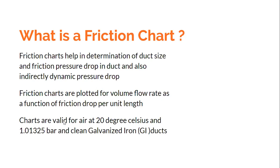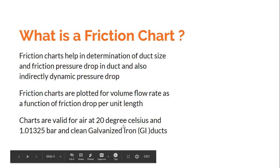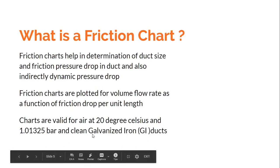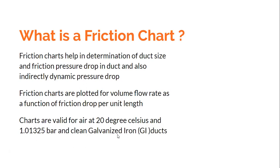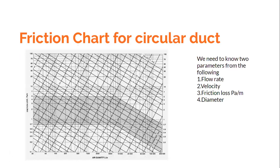The friction chart I am going to show is valid only for air at 20 degrees Centigrade and at a certain pressure — that means at a certain specific volume. It is valid only for ducts that are clean and made of galvanized iron. If you are using a different material, different temperature, or different pressure, appropriate corrections are suggested, which is not a great difficulty.